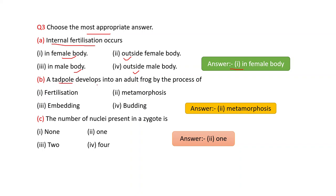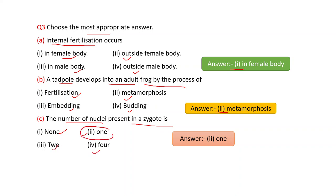A tadpole develops into an adult frog by the process of — fertilization, metamorphosis, embedding, or budding? The correct answer is metamorphosis. The number of nuclei present in a zygote is — none, one, two, or four? The answer is one. A zygote is a single cell.